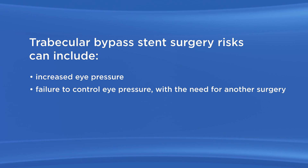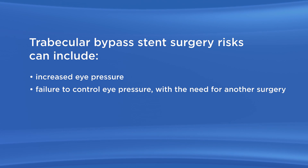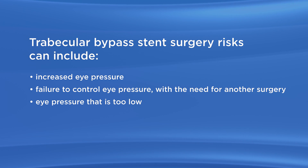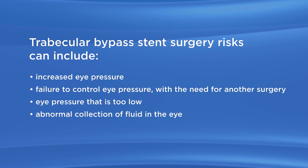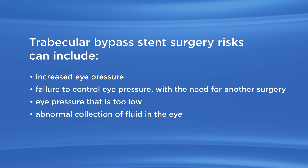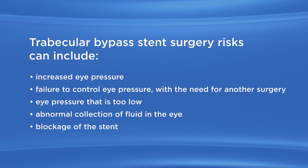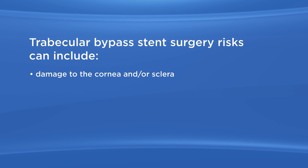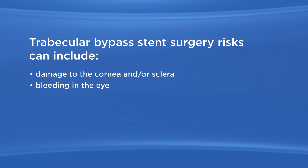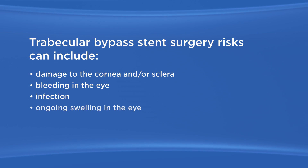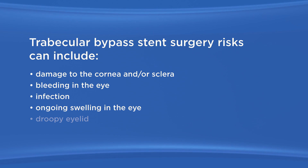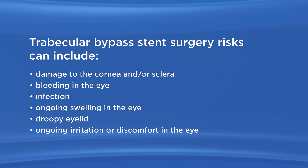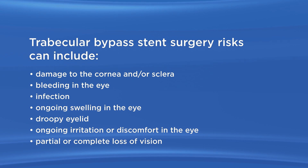Additional risks include failure to control eye pressure with the need for another surgery, either soon after or much later; eye pressure that is too low; abnormal collection of fluid in the eye, possibly requiring a second surgery; blockage of the stent; dislocation of the stent; damage to the cornea and/or sclera; bleeding in the eye; infection; ongoing swelling in the eye; droopy eyelid; ongoing irritation or discomfort in the eye; and partial or complete loss of vision.